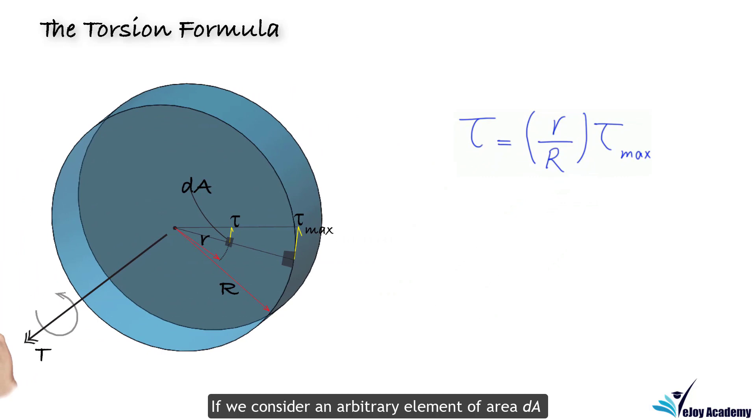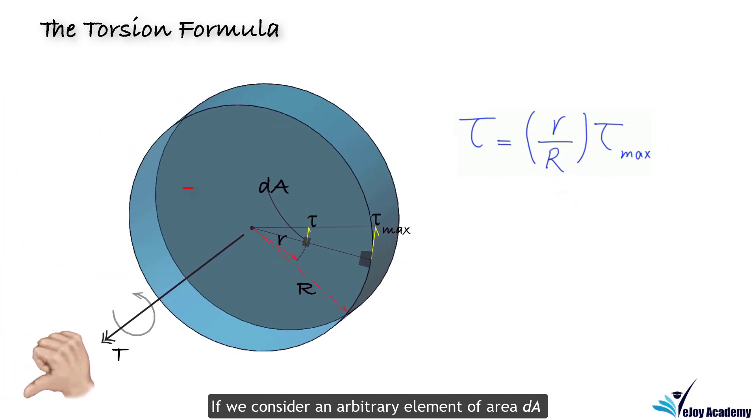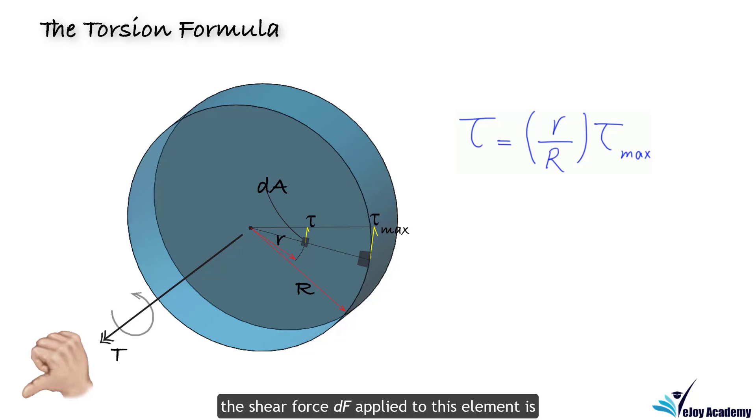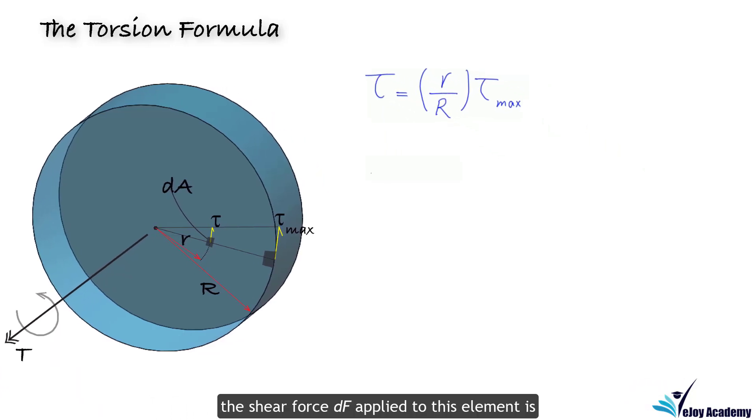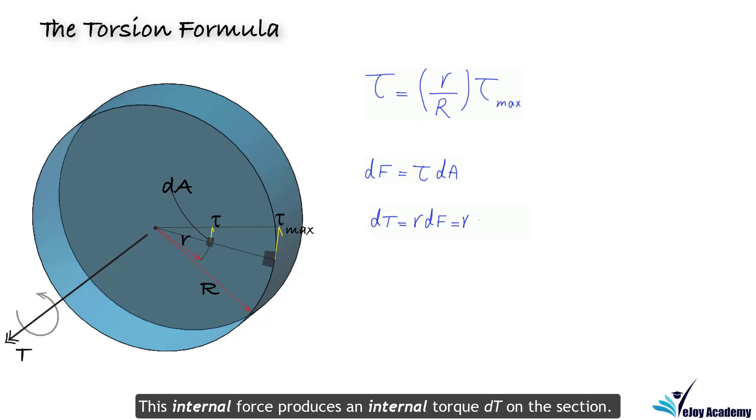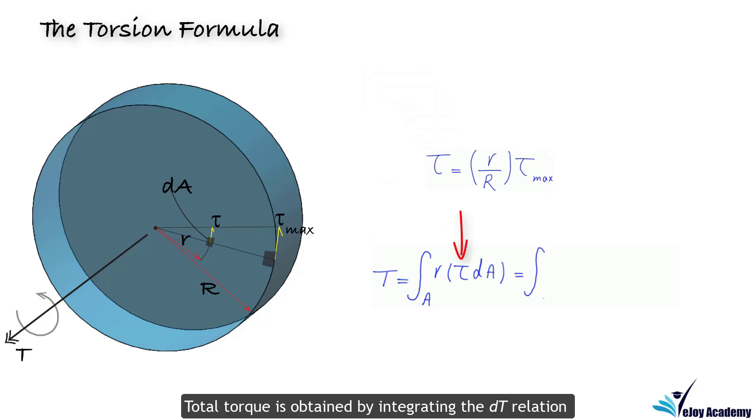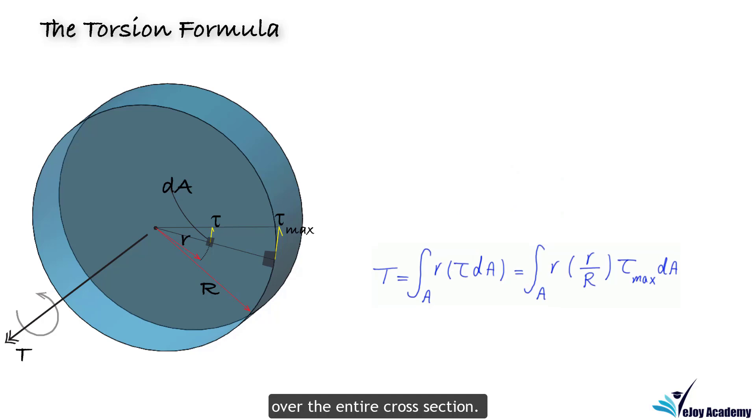If we consider an arbitrary element of area dA located at the radial distance r, the shear force dF applied to this element is tau times dA. This internal force produces an internal torque dT on this section. Total torque is obtained by integrating the dT relation over the entire cross section.